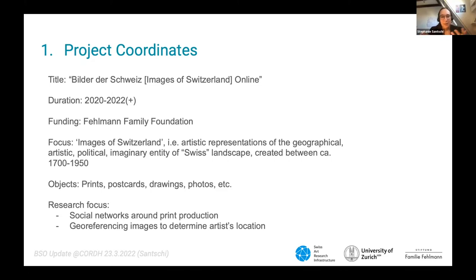The objects that we work with concretely are prints, postcards, drawings, photos, etc. — roughly the category of prints and drawings. Our research focus is on one hand the social networks around the print production, and then also the artist's location, meaning from where these images have been taken or created, to understand more about their production history. For that we're looking to georeference some of our images.